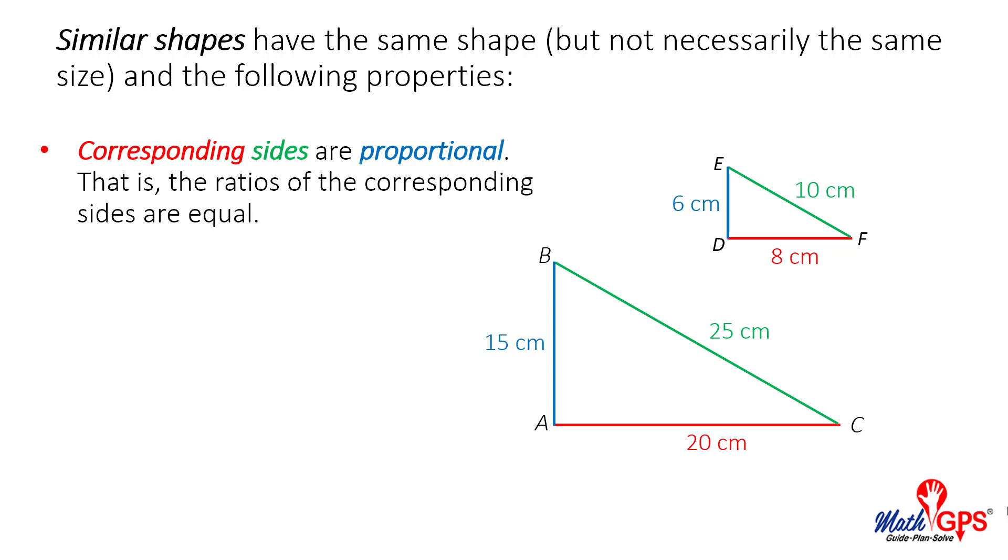Similar shapes have the same shape, but not necessarily the same size, and the following properties. Corresponding sides are proportional. That is, the ratios of the corresponding sides are equal.